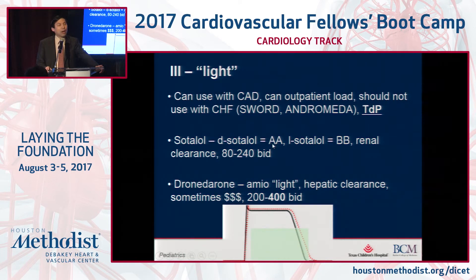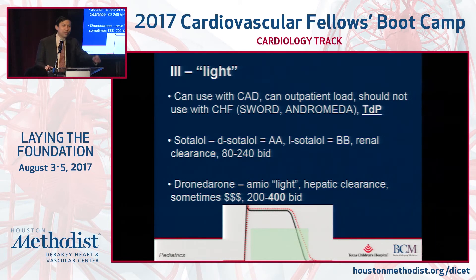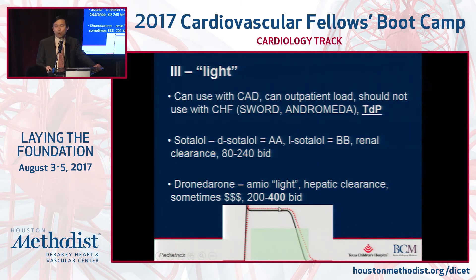The D-sotalol is the antiarrhythmic component and the L-sotalol is your beta blocker, so I like to think of sotalol as a 50-50 beta blocker and antiarrhythmic — a lighter version of amiodarone. It can be loaded from 80 up to about 240 milligrams twice a day, monitoring the QTc. Dronedarone I like to think of as maybe 90% antiarrhythmic and 10% beta blocker — amio-lite, light on the effect and light on the side effects. It's hepatically cleared but not always covered on insurance, and 400 mg BID is the standard dose. Essentially these agents are prolonging your QT.